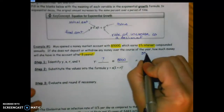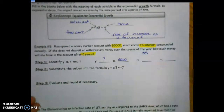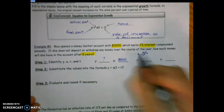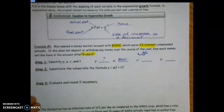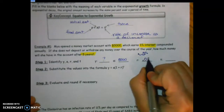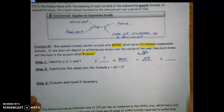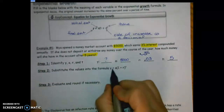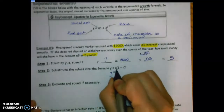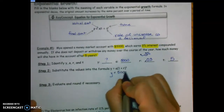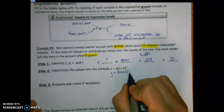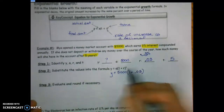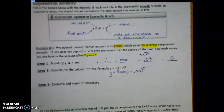To convert 3%, I take the invisible decimal and move it two places to the left: one, two. I need a placeholder zero, so r = 0.03. T is the amount of time, which is 5 years. Now I plug into the formula: y = 5000(1 + 0.03)^5.